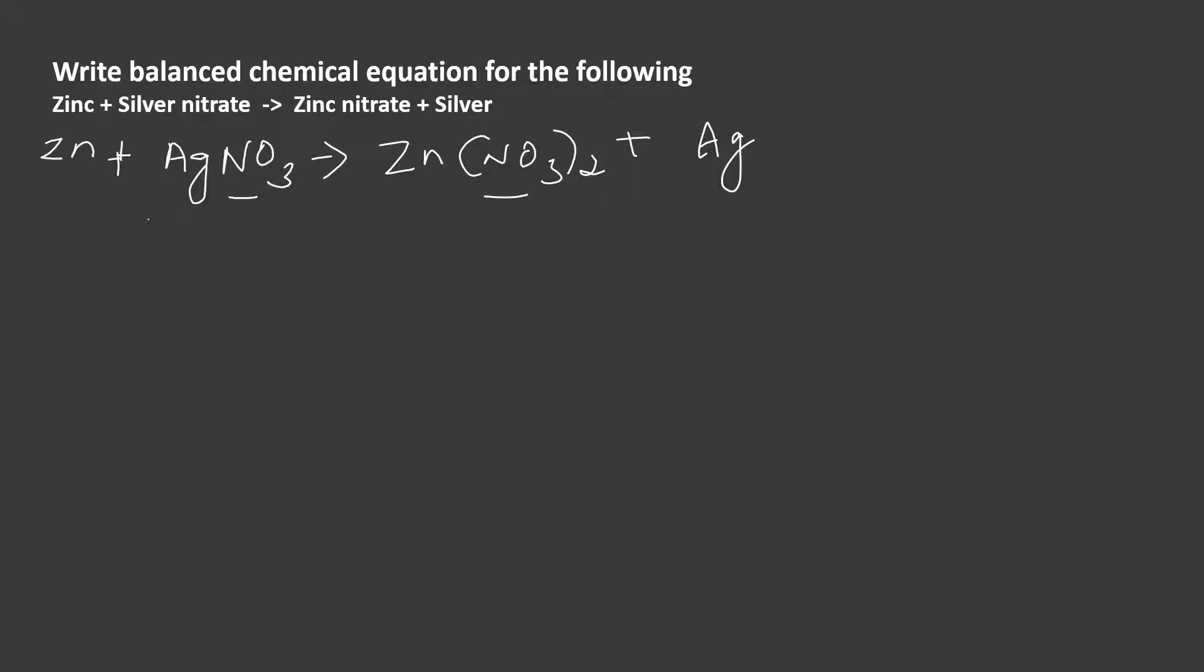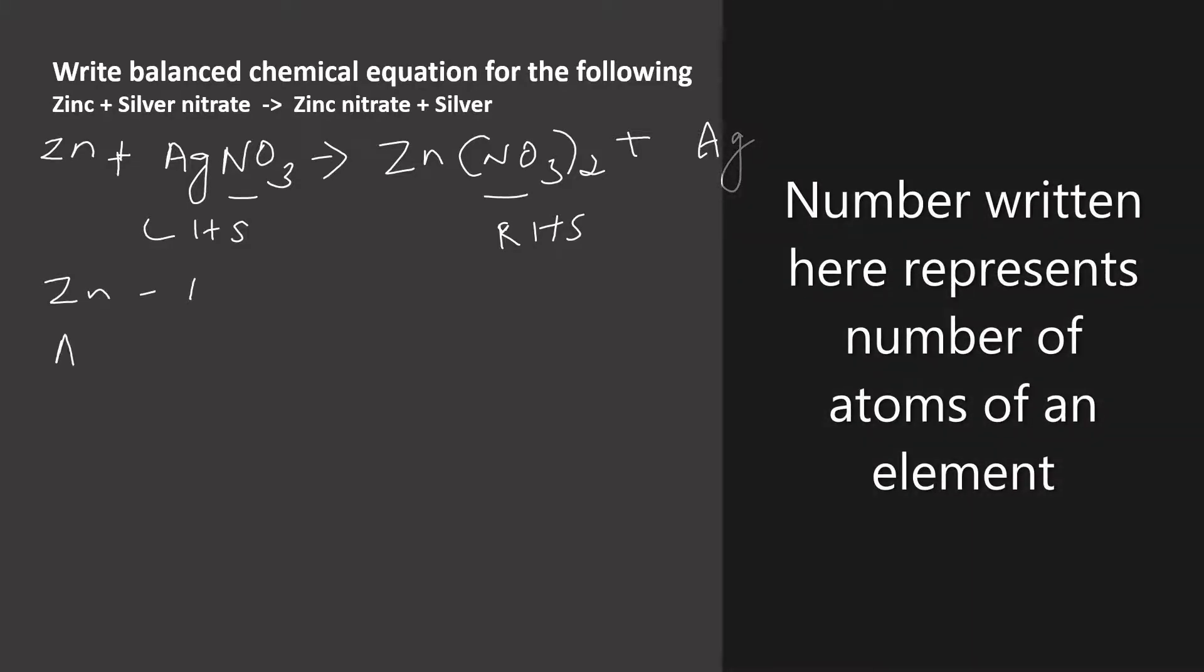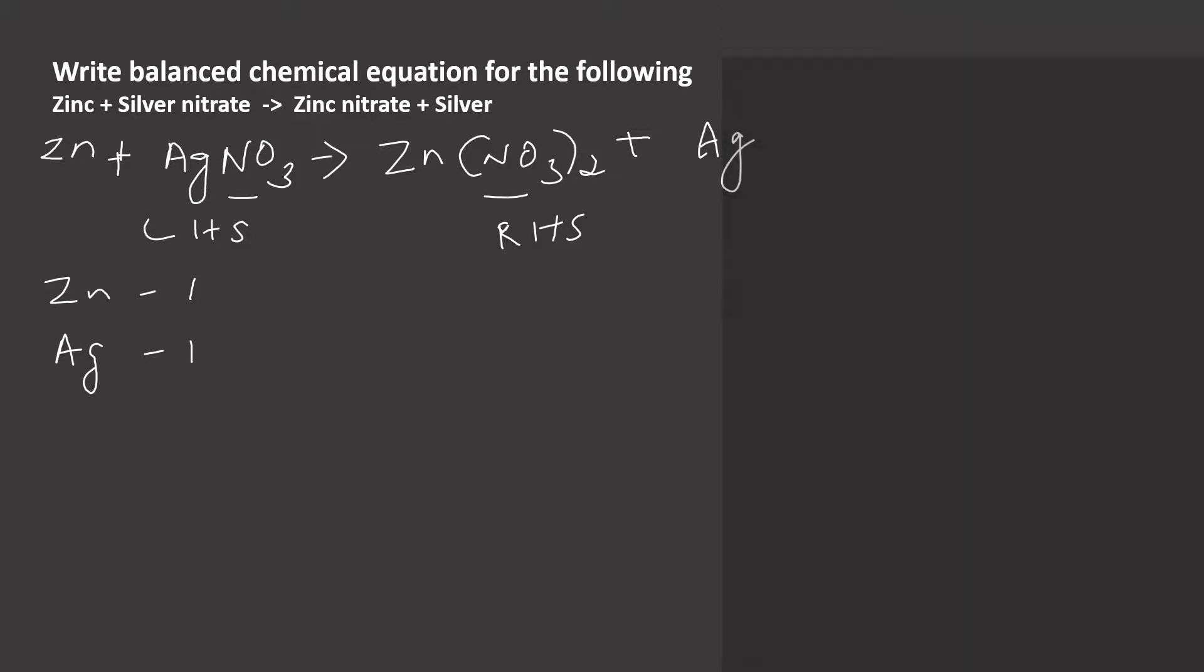First let us write left-hand side and right-hand side. The reactants are in left-hand side and the products are in the right-hand side. First let us write elements in the left-hand side one by one. For zinc it is only 1. For silver also only 1. Nitrate is a polyatomic ion but we are going to take it as a single unit here. So let us write NO3, that is also only 1.